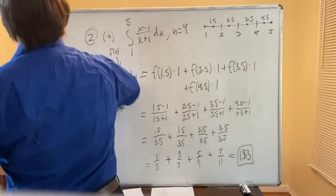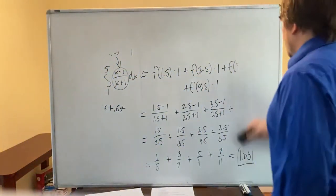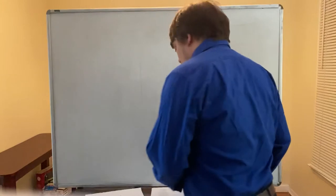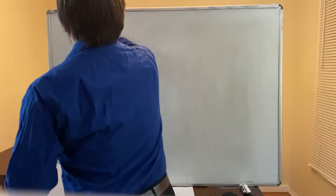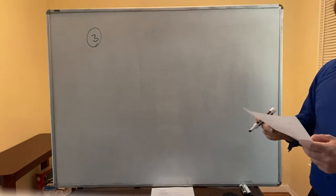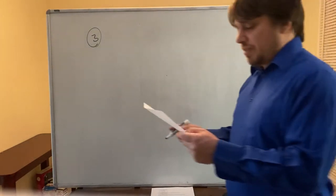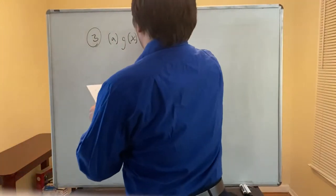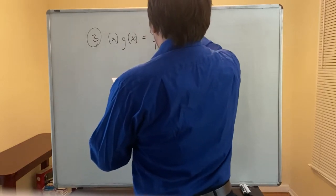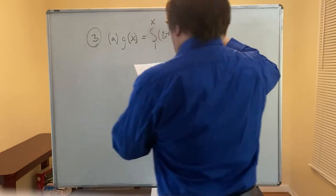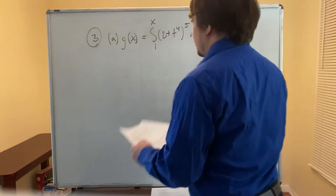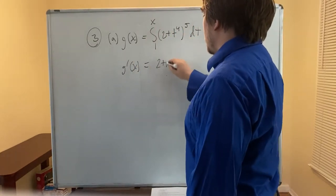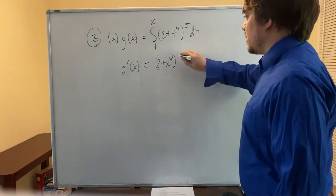That's a good overview of approximating using left endpoints, right endpoints, and midpoints. Now number three: use Part 1 of the Fundamental Theorem of Calculus to find the derivative. For 3a, g(x) = the definite integral from 1 to x of (2 + t⁴)⁵ dt. The derivative g′(x) is simply (2 + x⁴)⁵ — just plug x in for t, since the upper limit is x.